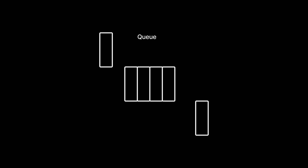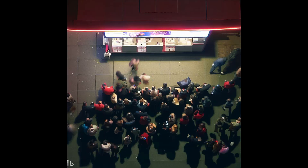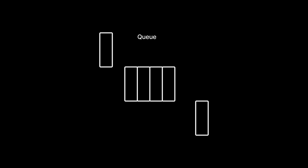Queue. A queue is a data structure that works based on the First In First Out (FIFO) principle, best described using a ticket line at a movie theater. The person who joins the line first gets to buy the ticket first, then the second person, and so on. Similarly, the first element inserted into the queue is the first to be removed — so if you add elements A, B, C, D in that order, you will always remove A first, then B, then C, and finally D.